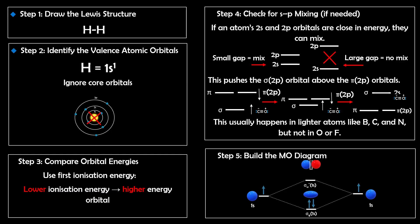Step 2: Identify the valence atomic orbitals. Use each atom's electron configuration to figure out which valence orbitals are involved, and you can usually ignore the core orbitals unless specifically focusing on them. Step 3: Compare orbital energies. For different elements, use first ionization energies to estimate the orbital energies — lower ionization energy means higher orbital energy in the diagram, and this helps you decide which atoms go higher or lower.